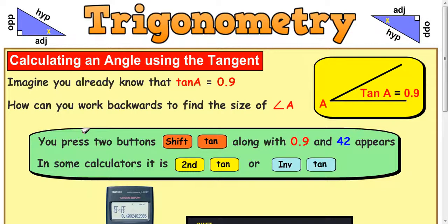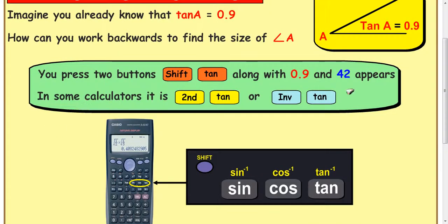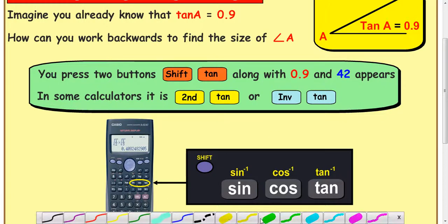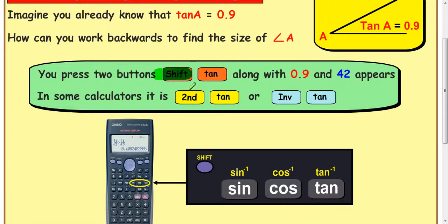Let's have a look at how you do that. Imagine you already know that the tan of A is equal to a decimal value, but you actually want to know what that angle is. You can do that in your calculator. You can either hit shift tan along with 0.9 and an angle of 42 appears. You can use a second function button and then tan, or inverse tan.